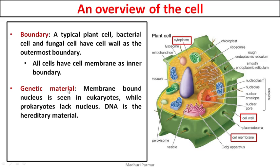Genetic material is DNA — also called hereditary material. It is membrane-bound, meaning it has an outer membrane which protects the DNA inside. This membrane-bound organelle is called the nucleus and it is seen in eukaryotes, while prokaryotes lack a nucleus. Bacteria do not have a nucleus.